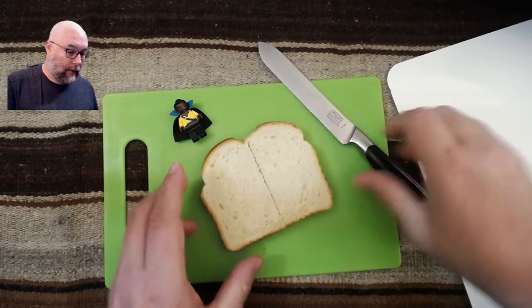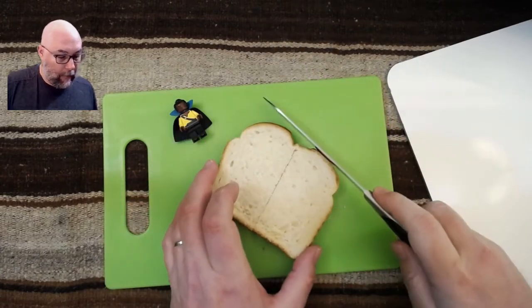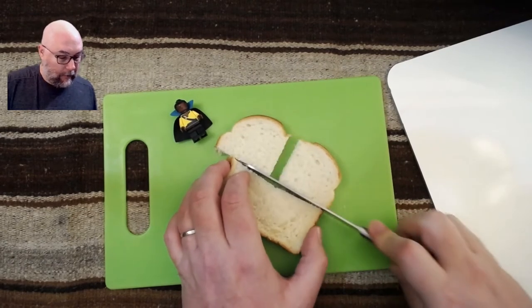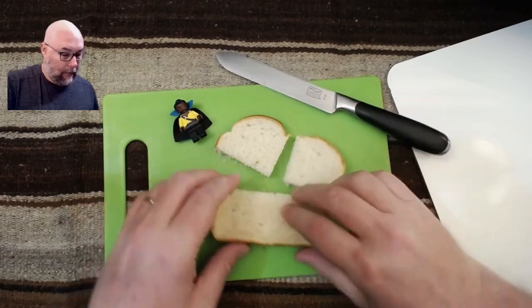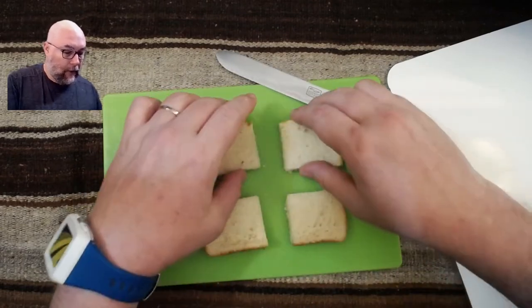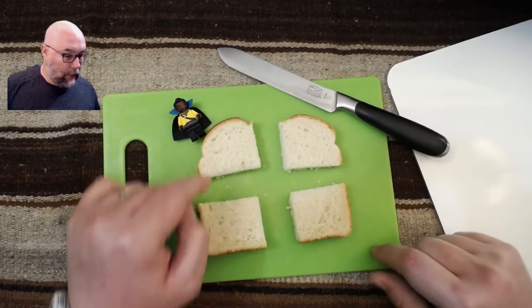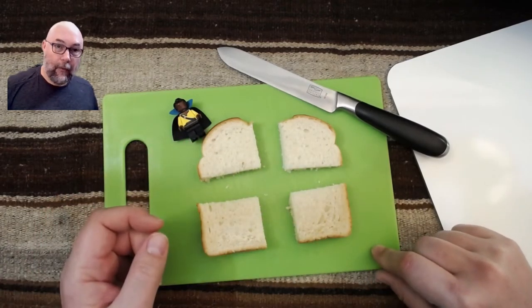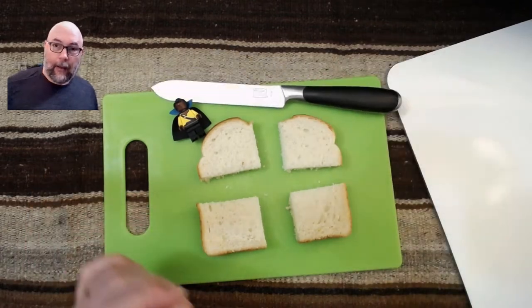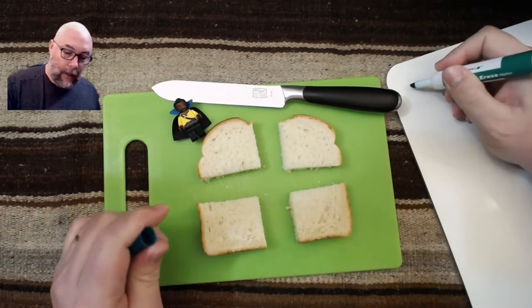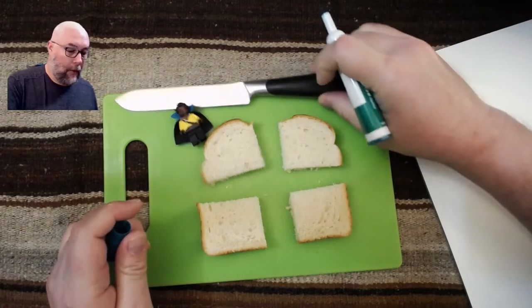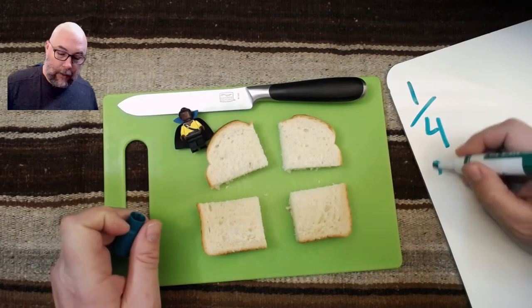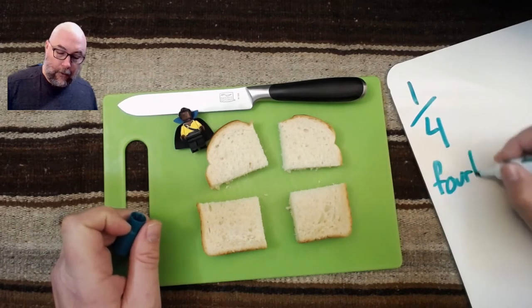And if I cut this again, I'll have four equal pieces like this. So if you remember, these are called fourths. Each one of these is called one fourth, or it's a fourth. And the way we write that is by writing a one, because we're only talking about one piece, over four. So it's one fourth.